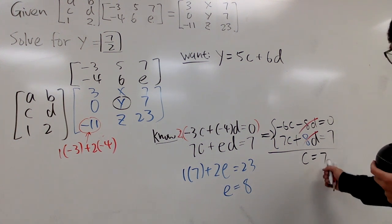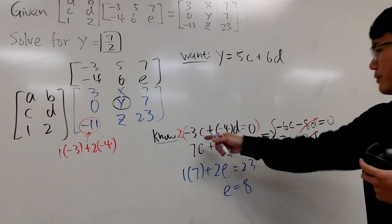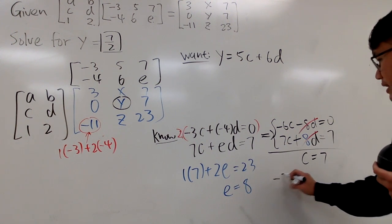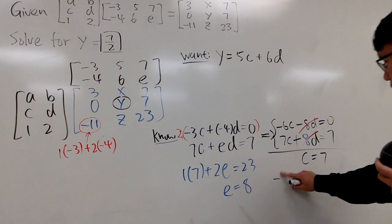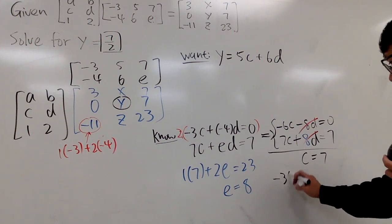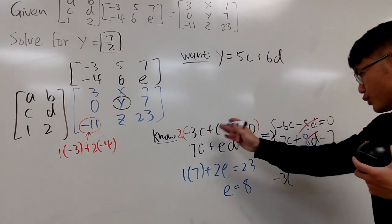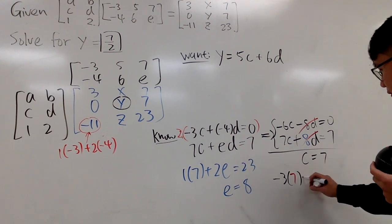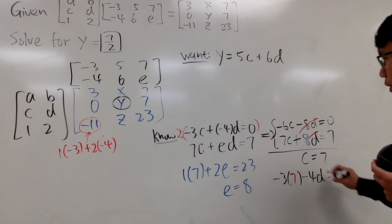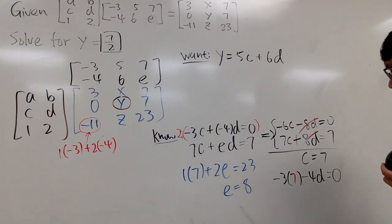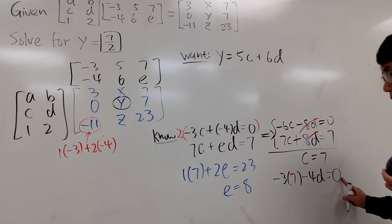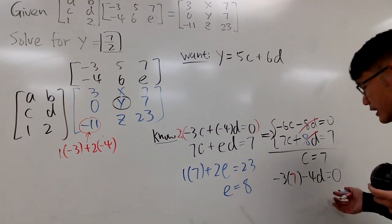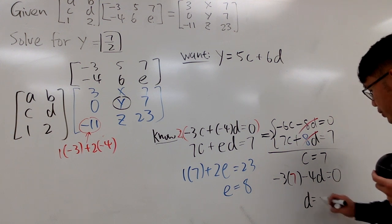And I will plug in 7 into this original. So I know negative 3 times this 7 into the c, and then minus 4 times d equals 0. And, of course, this is negative 21. You put it on the other side, becomes positive 21, and divide both sides by negative 4. You get d is equal to negative 21 over 4.